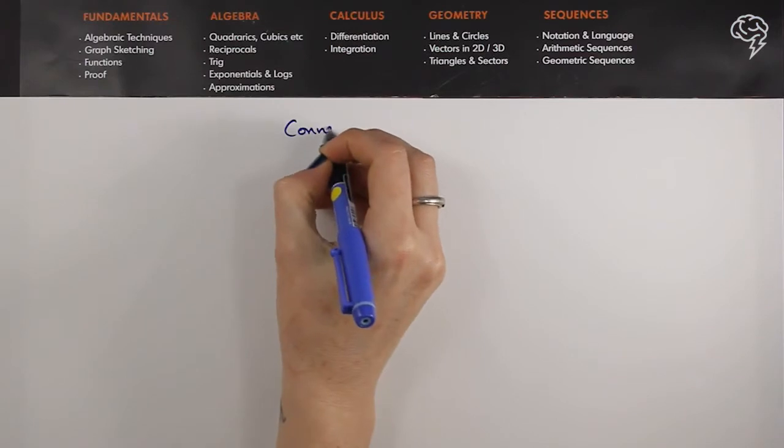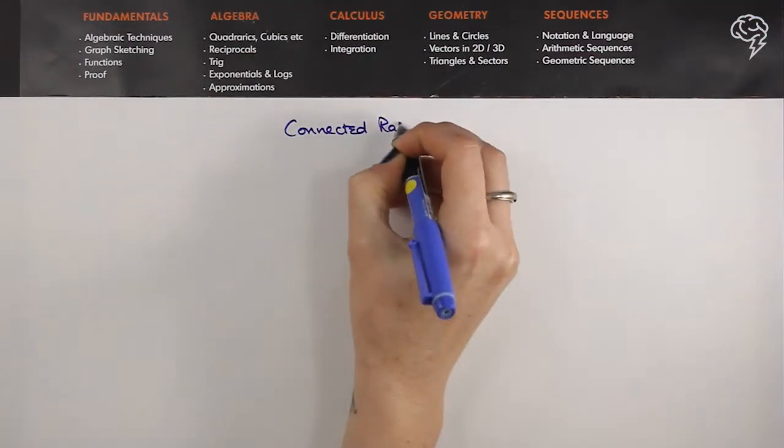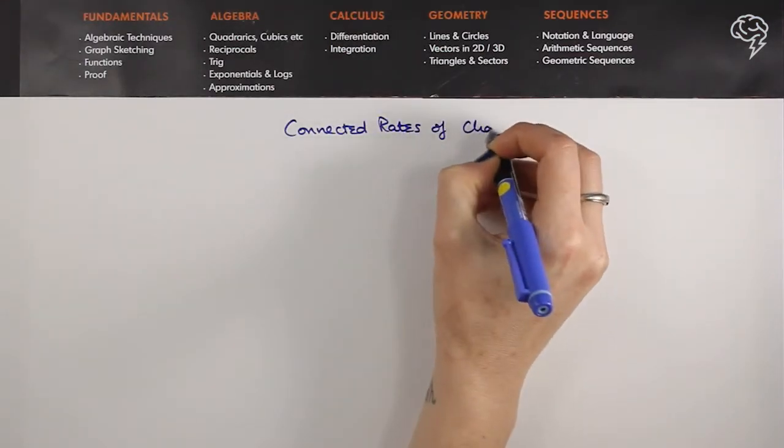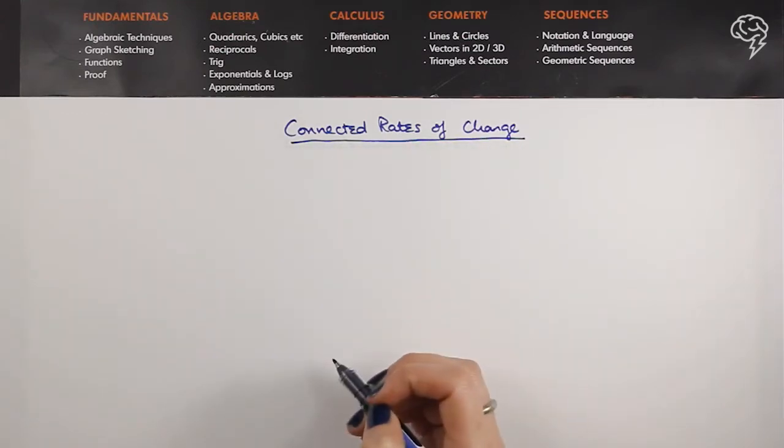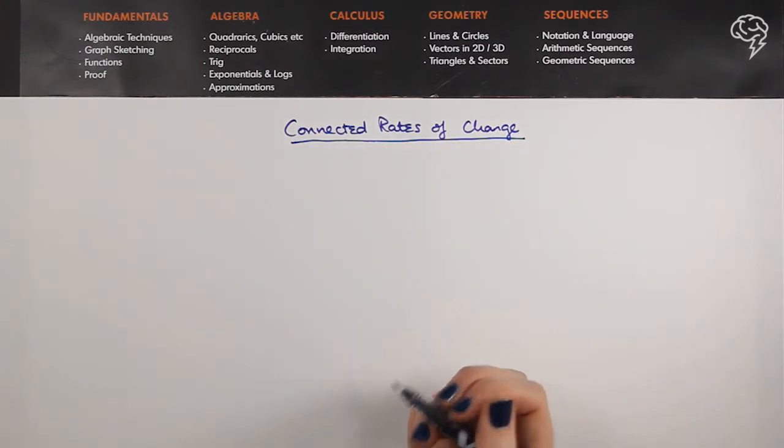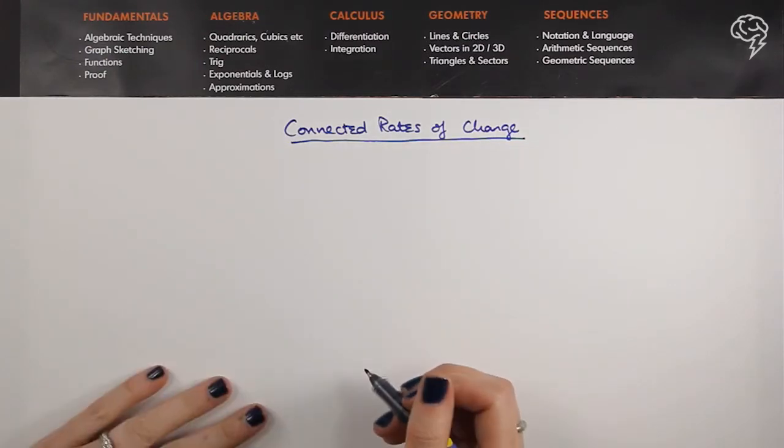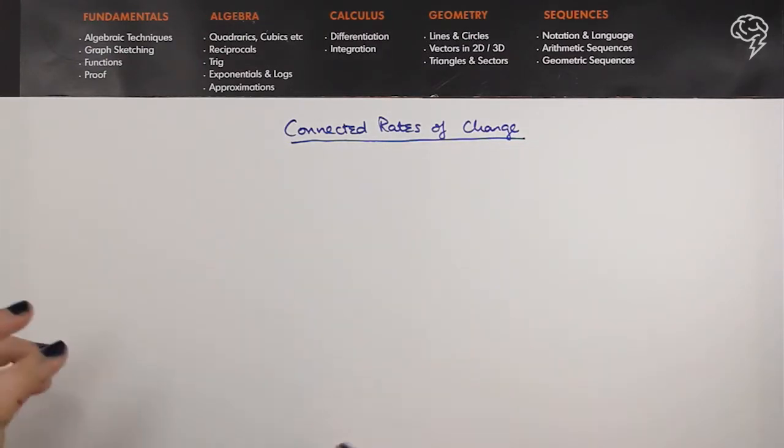Connected rates of change is something that students find very difficult that actually is not difficult, and I'm not just saying that because I find maths easy. I'm saying it because I've taught lots of students who, once they realize that all the questions are the same, they don't find it difficult. There's a whole heap of words and it sounds very confusing.